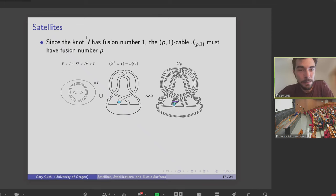Even better, it turns out this knot J has fusion number one, as we saw, it had a single band. But after you cable it, the fusion number increases. So the P-1 cable actually has fusion number P, which is what we wanted.